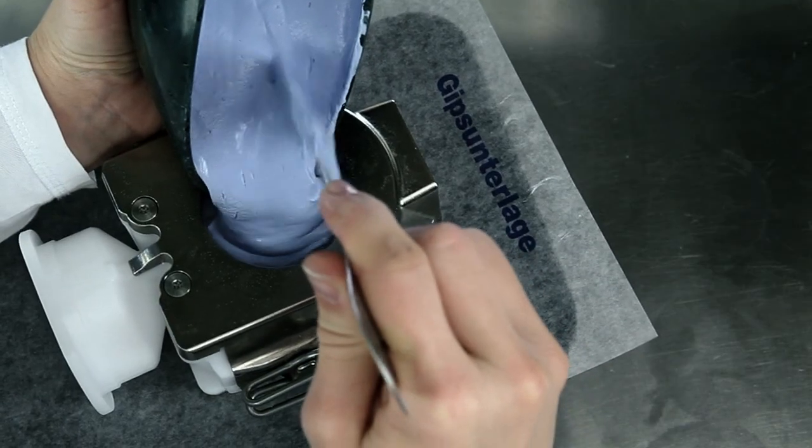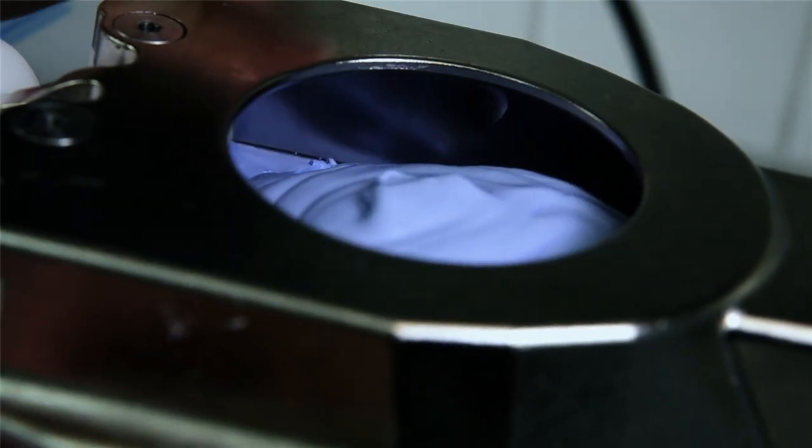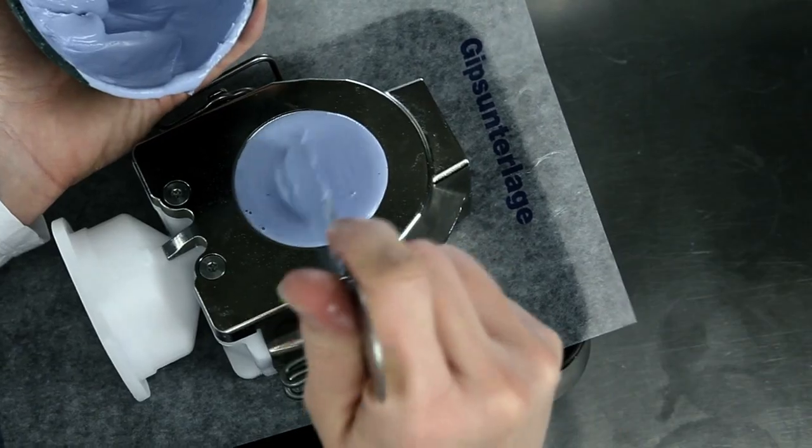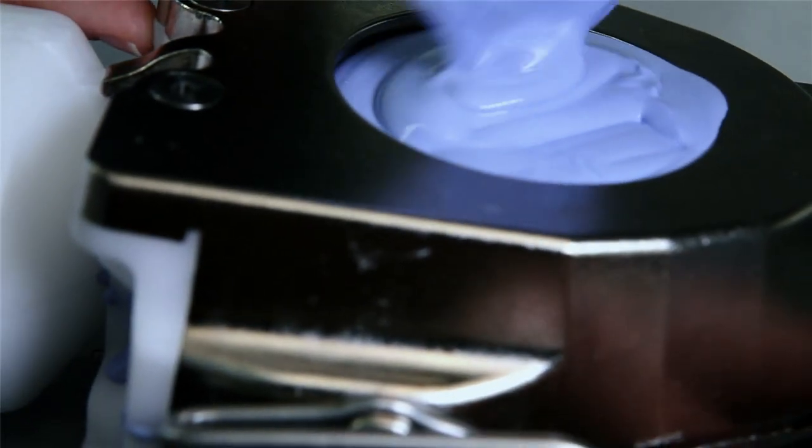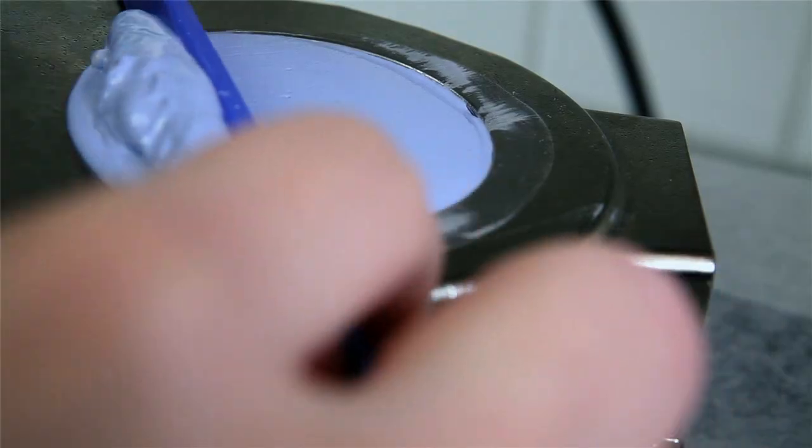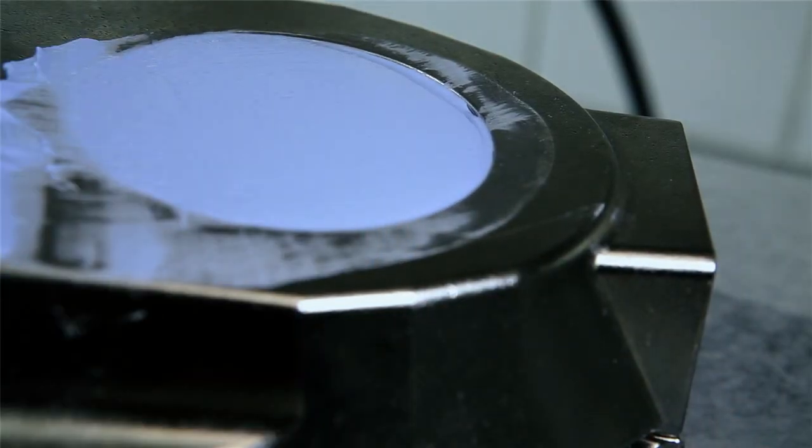Allow the mixed class 3 stone to flow into the opening of the flask on a shaker until the flask is completely filled. Prevent air from being trapped in the material. Skim off the excess stone using the IvoBase spatula so that no stone protrudes from the flask opening.